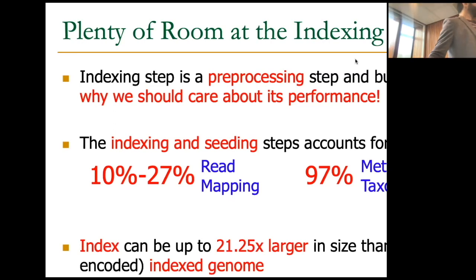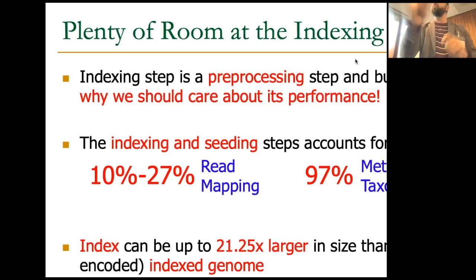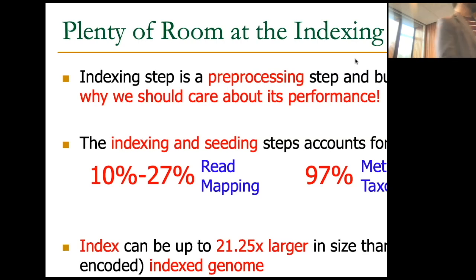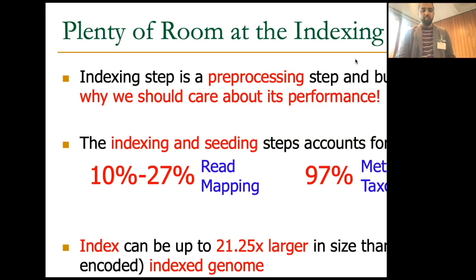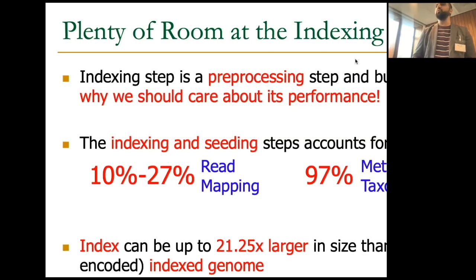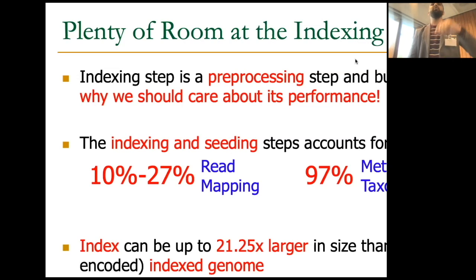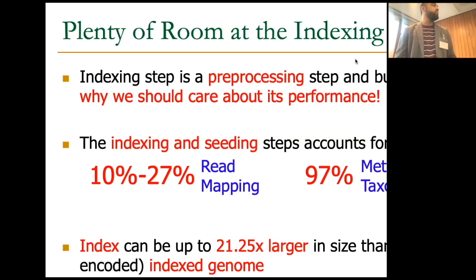The index can be very large — about 10 to 21 times larger than the indexed genome. This ratio varies based on parameters like k-mer length. And if you're familiar with minimap2, when you calculate minimizers, you calculate hash values for all overlapping k-mers before deciding which ones to include. All of these reasons make indexing and seeding very expensive.